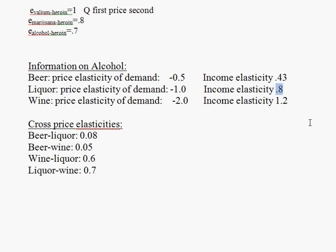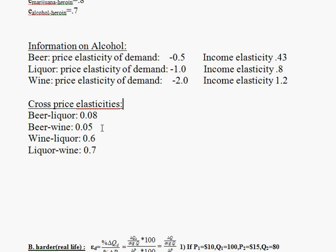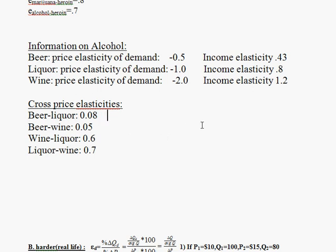When it comes to cross price elasticity, I don't think I've ever seen one bigger than one in absolute value — the largest I recall seeing was approximately one. All of these products are similar alcoholic beverages, so they are all substitutes, and that's why all these cross price elasticities are positive. Remember, a cross price elasticity tells us how the quantity of the first product responds to a change in the price of the second product.